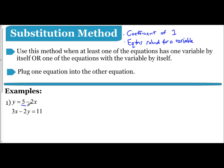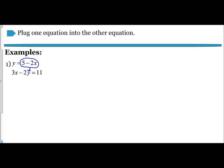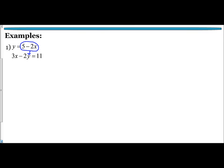So I'm going to take 5 minus 2x and substitute it in for y in the other equation. When you substitute something in, the best thing to do is to put it inside parentheses. The reason is it allows you to see the distributive property and to make sure you're careful with negative signs. So we have 5 minus 2x being plugged in for y.